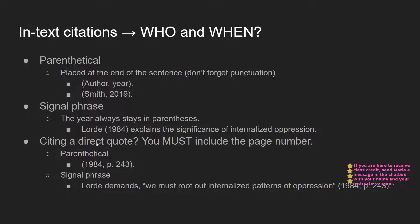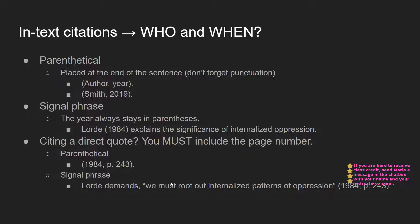If you are citing a direct quote in APA format — whether using a parenthetical citation or a signal phrase — you must include the page number. In a parenthetical citation it would look like: (1984, p. 243). In a signal phrase: Lorde demands [quote], followed by (year, page number) with a period at the very end.